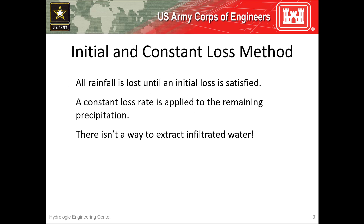Let's start our discussion by defining how losses are computed when using this method. Within the initial and constant method, all rainfall is lost until an initial loss volume is satisfied. After that volume has been filled, any additional precipitation is lost at a constant rate. Anything that's not infiltrated will become excess precipitation. Simple, right? But I do have to mention up front that there isn't a way to extract infiltrated water when using this method.